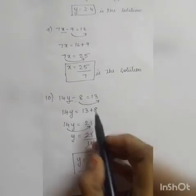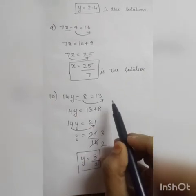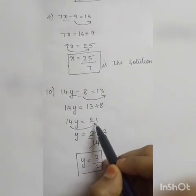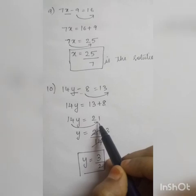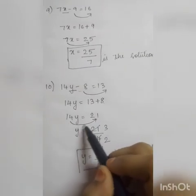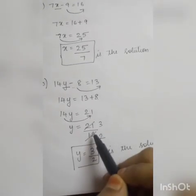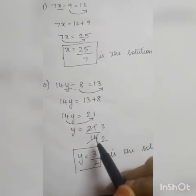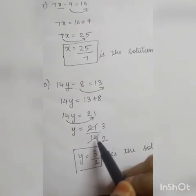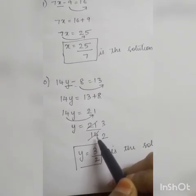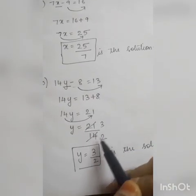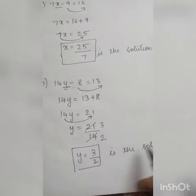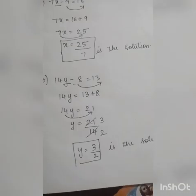I brought minus 8 to that side making it plus 8, so 13 plus 8 equals 21. Then I brought 14 to that side making it 21 divided by 14, and cancelling by 7 gives 3/2. So 3/2 is the solution for this equation.